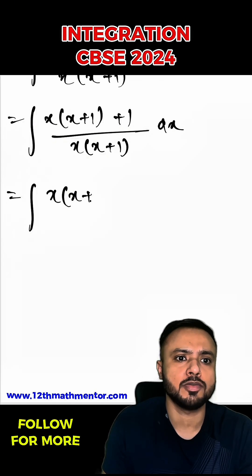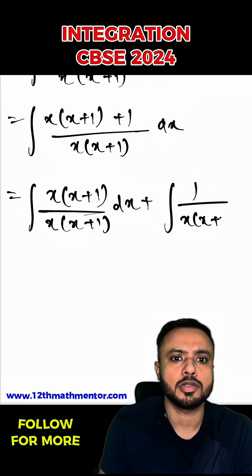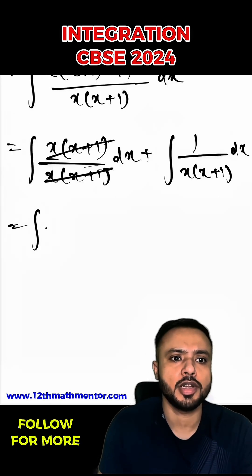Now I can separate it and write it as x into x plus 1 upon x into x plus 1 dx plus 1 upon x into x plus 1 dx integral. This and this is gone, so here I'm left only with integral of dx plus.